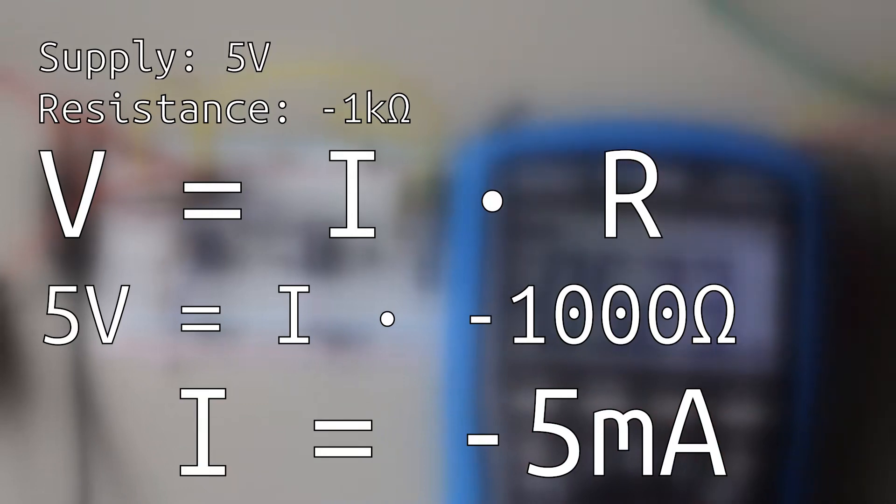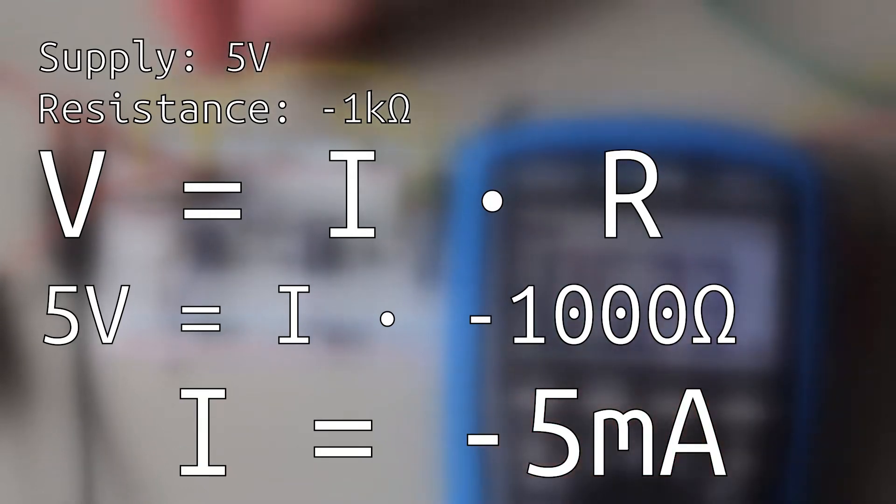That's right, current will be flowing from ground to 5 volts. This is kind of fun to think about, and we can actually simulate this experimentally in real life.